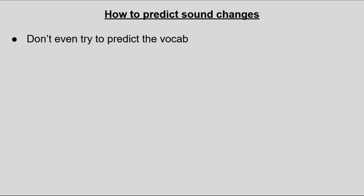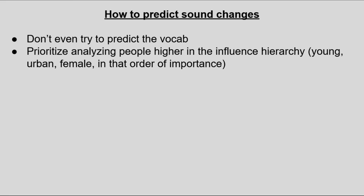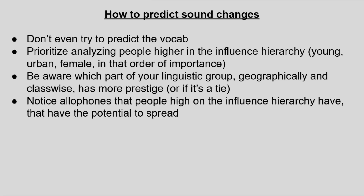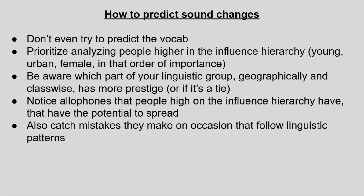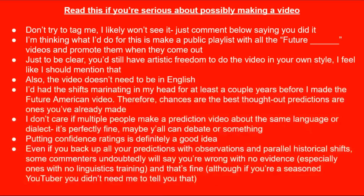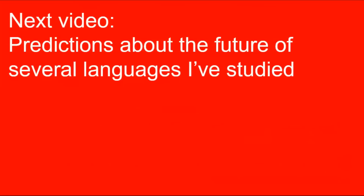So now we're at the end — let me recap everything about how to predict sound changes. First, leave the vocab alone. Then prioritize the speech of — in this order — young, urban, and female speakers, while also being aware of which part of your country has more social clout and which social classes get their speech copied more. Once you've figured out the influence hierarchies, notice new allophones or systematic mistakes that those people make using your most acute linguistic ear — analyzing yourself also works, provided you're somewhat high up in the hierarchy. Then you can expand on those new patterns using historical precedents for what happens when those kinds of changes get put in motion. My final piece of advice is simply to know linguistics. If you do make a future predictions video about your own language or dialect, come back and comment about it, and shout me out somehow. Good news — while writing this video, I decided I'm going to make the predictions about a hodgepodge of languages video next. Thanks for watching, and I'll see y'all next time!